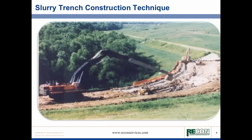This slide illustrates the slurry trench method. As you can see, the trench is a continuous trench where the backfill is being placed on one end and the excavation proceeds in the opposite direction. The trench is supported with a high-density fluid, generally 15 pounds per square foot differential between the backfill and the slurry. It's excavated by a hydraulic excavator in a continuous motion.